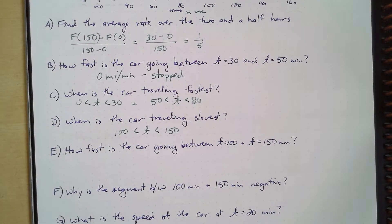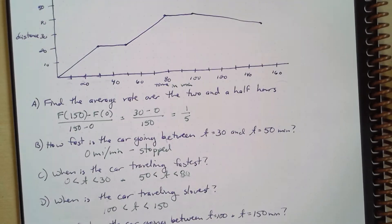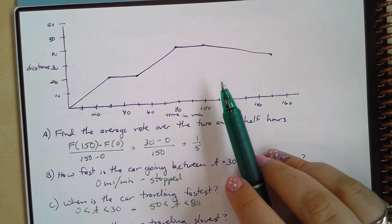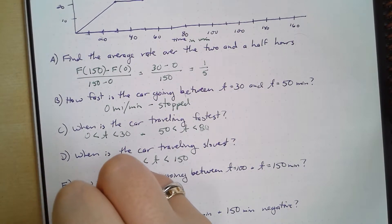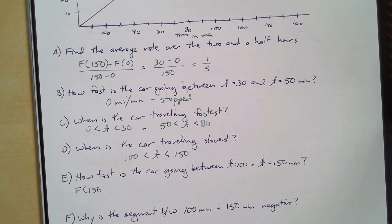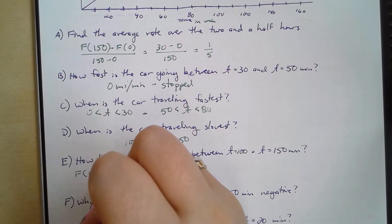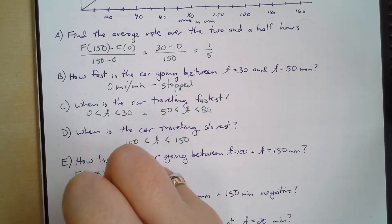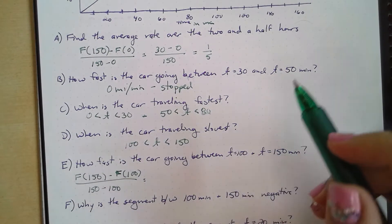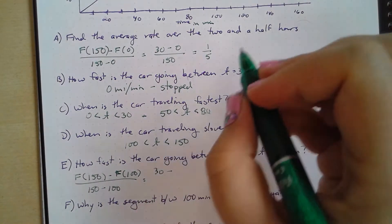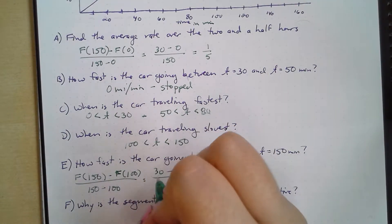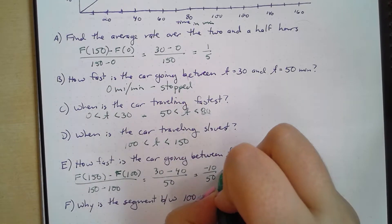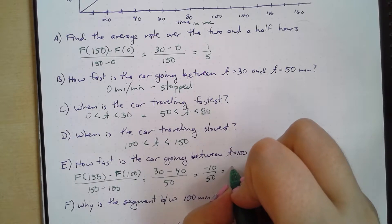How fast is it going between 100 and 150? Well, if I go up here, I can look between 100 and 150. I'm going to calculate this using rates of change. So f(150) minus f(100) over 150 minus 100. Well, f(150) is 30, f(100) is 40 over 150 minus 100 is 50. So that gives us negative 10 over 50, which simplifies down to negative one-fifth.